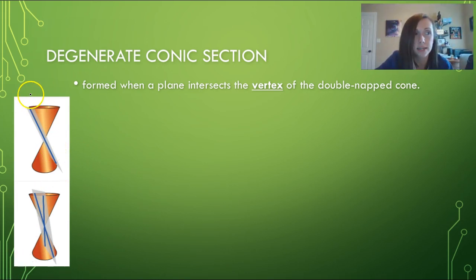This first one is going to be called a degenerate parabola. That means that it is basically on the edges of the cone. It follows the line that was used to rotate and make the cones.